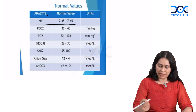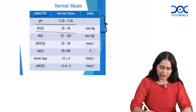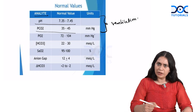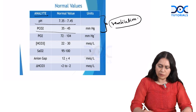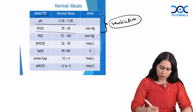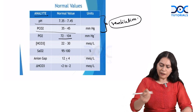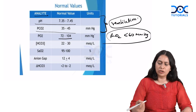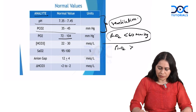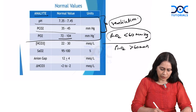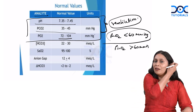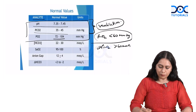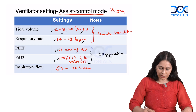In the ABG, we are concerned with pH and PCO2 for ventilation. Normal pH is 7.35 to 7.45; normal PCO2 range is 35 to 45. If this range is maintained, ventilation is adequate. PO2 normal is 72 to 104. If PO2 decreases below 60 mmHg, we call it hypoxemia and need to improve oxygenation. The target is to keep PaO2 above 60 mmHg. We see these three values in the ABG and change ventilator settings accordingly.